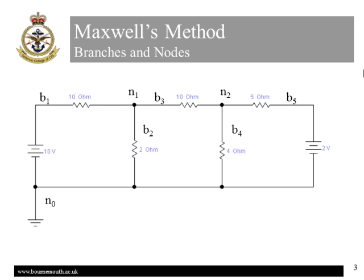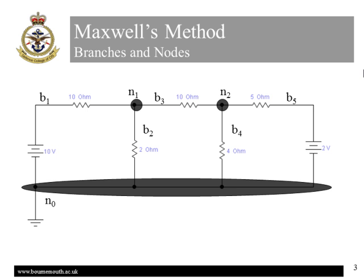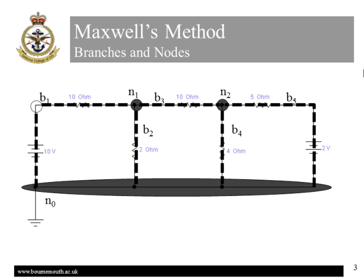This slide gives a quick reminder of some of the terms used in circuit analysis. A node is a junction between branches of the circuits characterized by its unique voltage. Note that the ground here is one node which runs across the whole of the bottom of the circuit at 0 volts earth potential. A branch contains an impedance and possibly an active current or voltage source, and it's characterized by the current flowing through it.